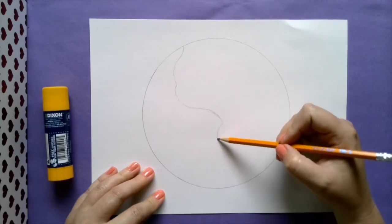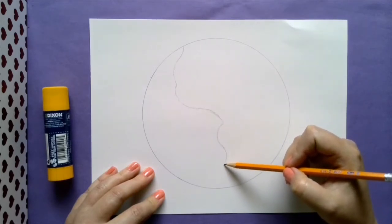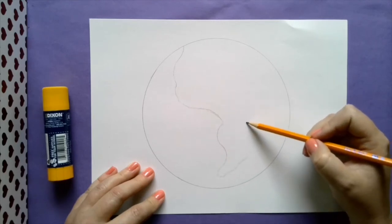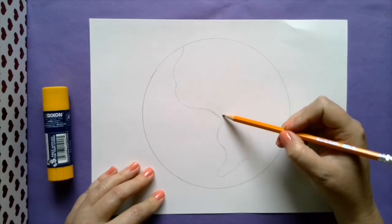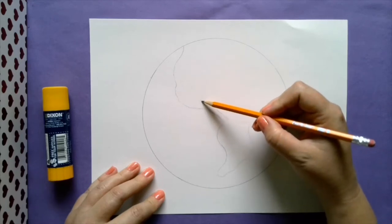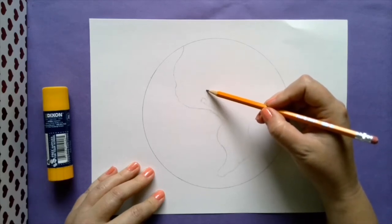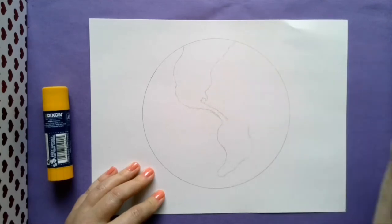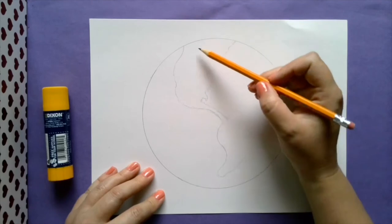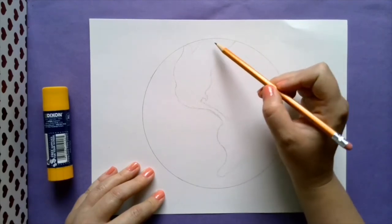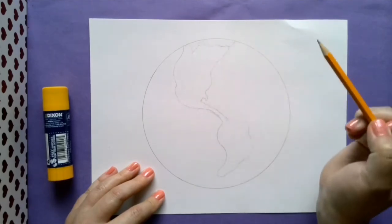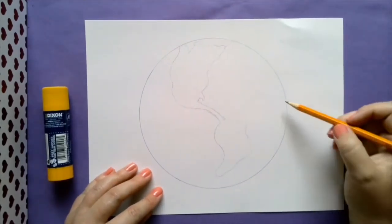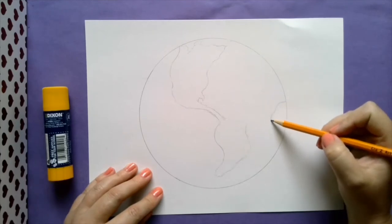It's okay if it's not perfect because we're going to cover this in little scraps of paper anyway. Come back up the east coast—there's Florida coming back up into Canada like that. This is all ice fields and islands. Then on our side right here let's add the west coast of Africa.